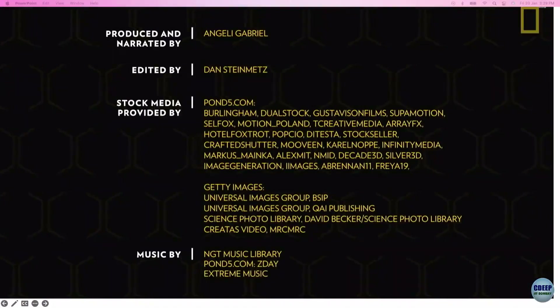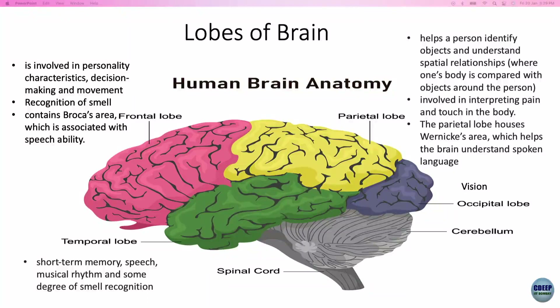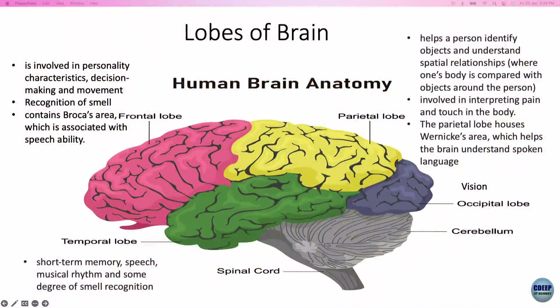Now I'm going to explain human brain anatomy in detail. You have a frontal lobe in the front part of the head, a parietal lobe on top, a temporal lobe on the side, and an occipital lobe on the back of the head. These are the four lobes.